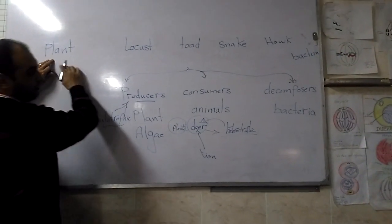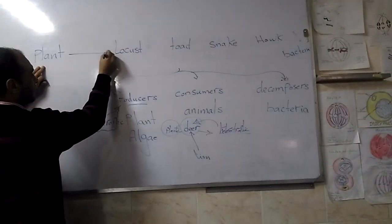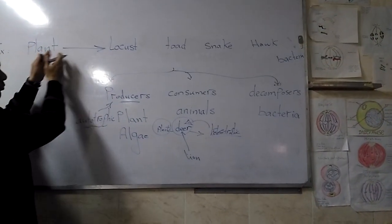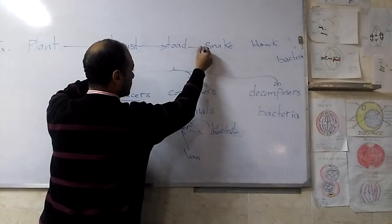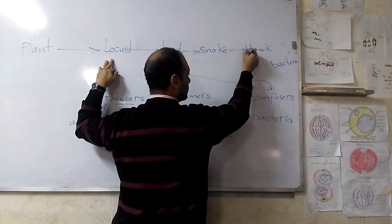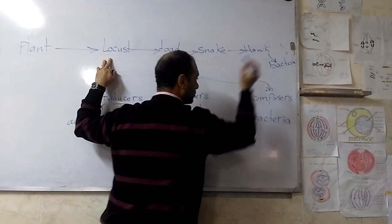So the energy passes from plant to locust, then from locust to toad, to snake, to hawk, to bacteria.